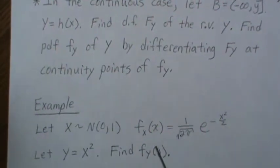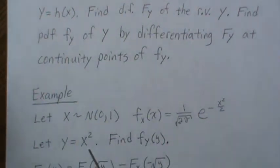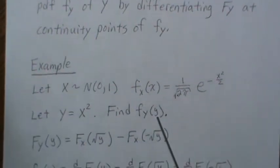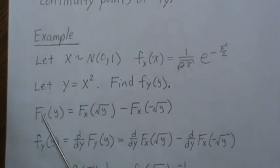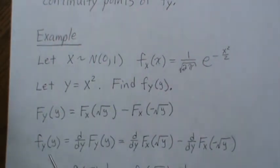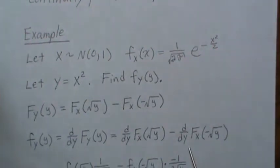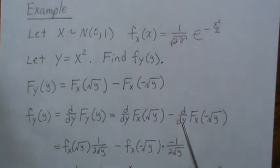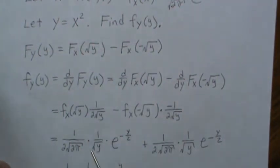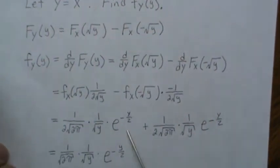Let X be standard normal N(0,1) with its known density, let Y = X², and we want to find the density of Y. We showed that F_Y(y) = F_X(√y) − F_X(−√y). Taking the derivative, by the chain rule we get f_X(√y) · (1/(2√y)) from the first term, and the same expression from the second term since f_X is symmetric. Adding them gives f_Y(y) = f_X(√y) / √y.